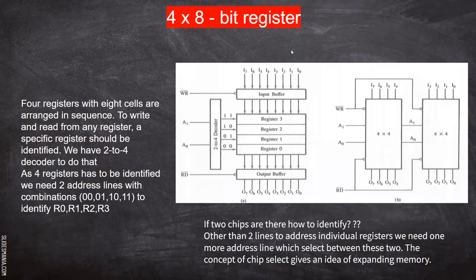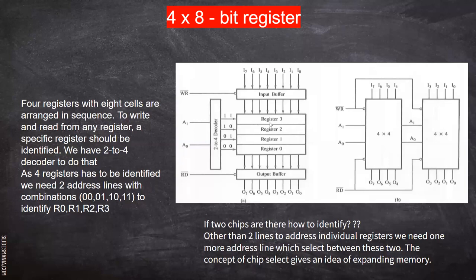Let us consider how the information in each memory location can be extracted using a unique address. We'll see the logic behind that. Consider we have four memory locations, or we can say four registers in a memory chip. We have four registers, which means four pieces of information can be stored. Now, how to address each individually.